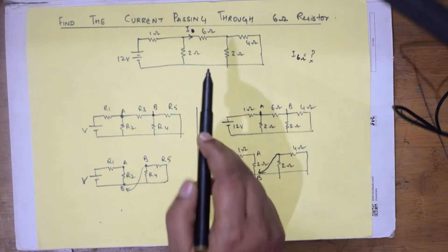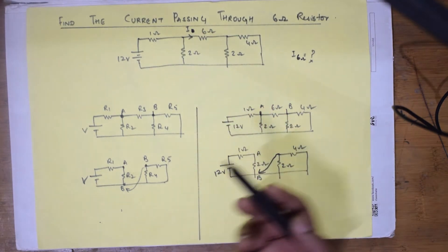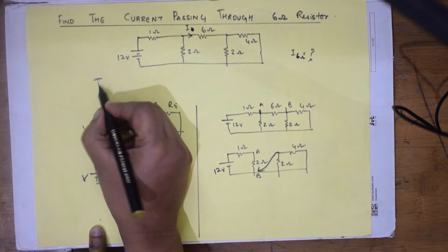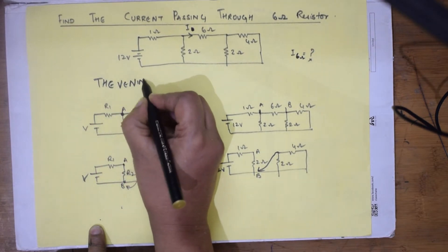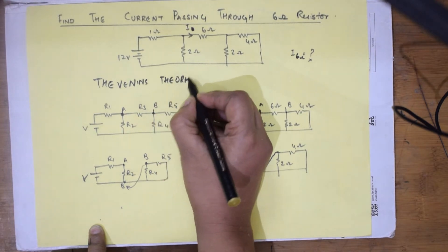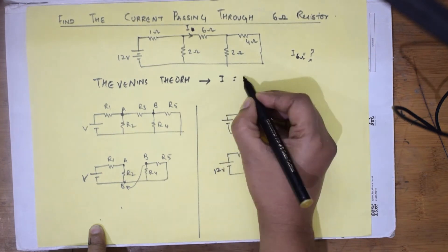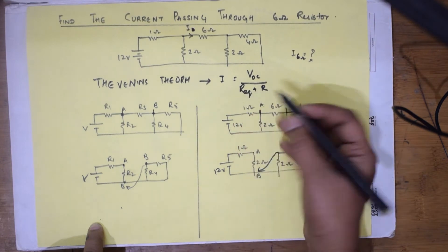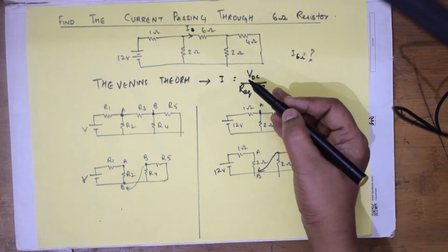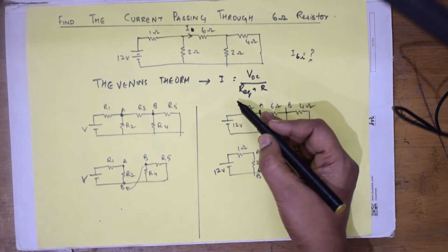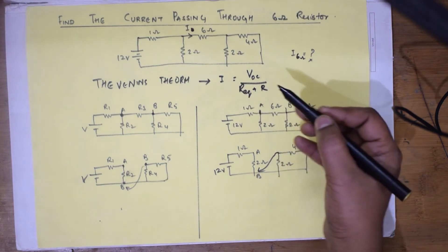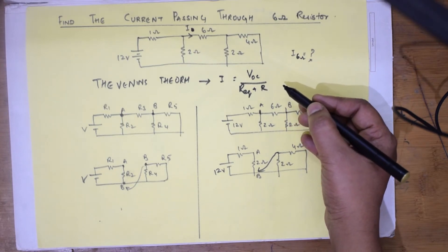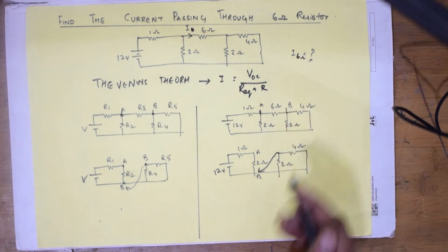For a given circuit, you need to find the current flowing through a six ohm resistor. This can be done using a theorem called Thevenin's theorem. According to Thevenin's theorem, the formula is: I = VOC divided by (R_equivalent + R), where VOC stands for open circuit voltage, R_eq is the equivalent resistance, and R is the resistance through which the current is to be found.